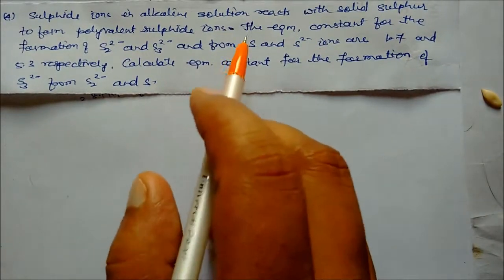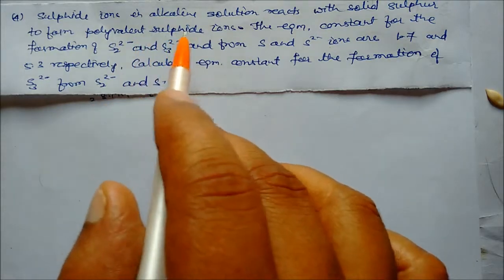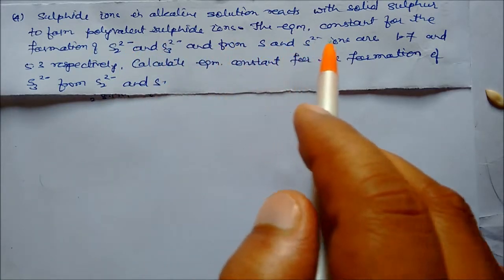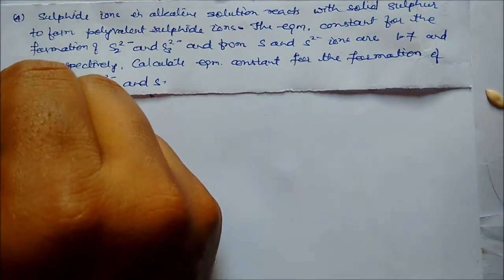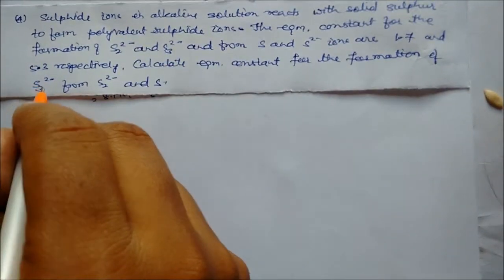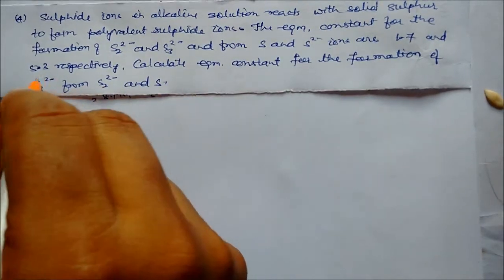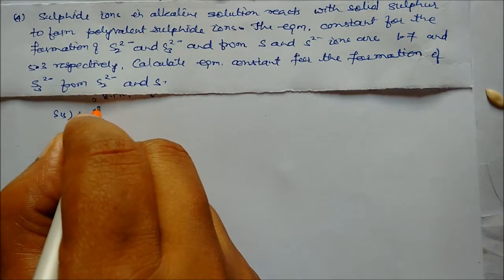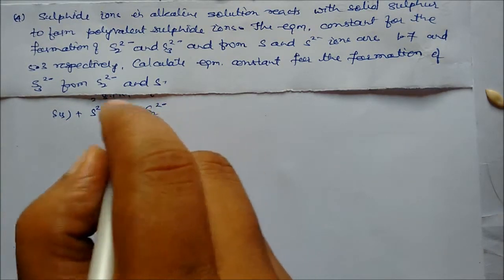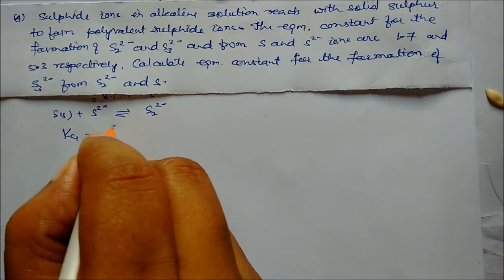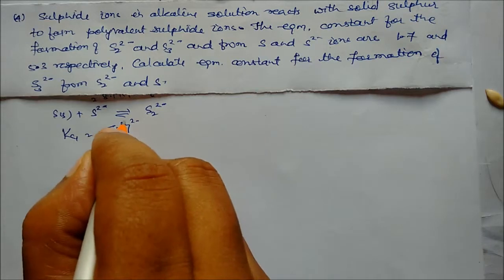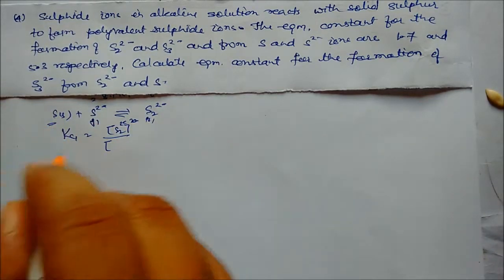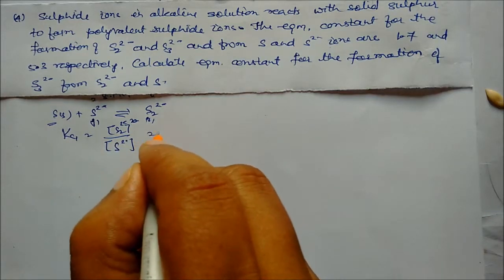Next problem involves sulfide ions in alkaline solutions reacting with solid sulfur to form polysulfide ions. The equilibrium constants for formation of S₂²⁻ and S₃²⁻ ions from S and S²⁻ ions are 1.7 and 5.3 respectively. We write two equations: equation 1 is S (solid) + S²⁻ ⇌ S₂²⁻, with Kc1 = [S₂²⁻]/[S²⁻] = 1.7.